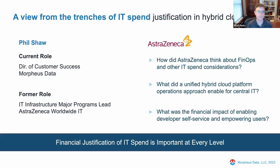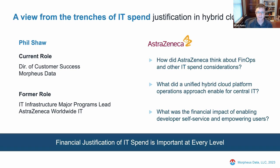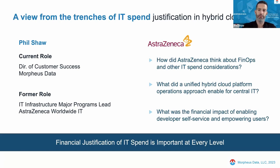Where the rubber hits the road is how this works inside the enterprise. I invited Phil Shaw to join me — Phil is director of customer success at Morpheus. His role is to make sure all our customers are happy and getting what they need out of Morpheus — delivering on the business case they had when they purchased the platform. Before joining Morpheus, Phil spent years managing this reality inside AstraZeneca, dealing with end users, vendors, and cloud costs.